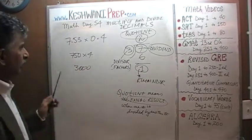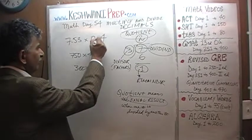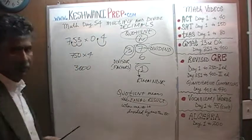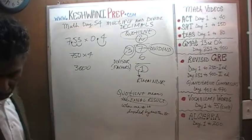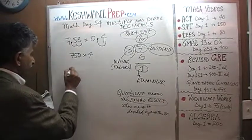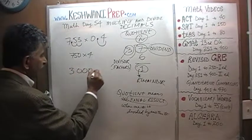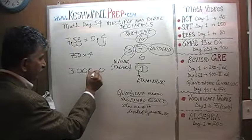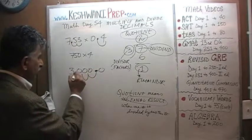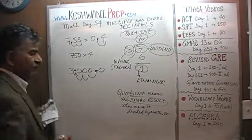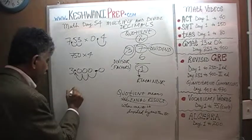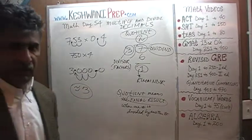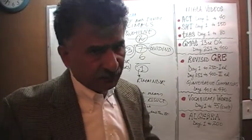Now, this one has one decimal place, this one has one decimal place, and this one has two decimal places. Which means we have to take our final answer — 3000 — and move the decimal place three places: one, two, and three. The correct answer is going to be around three. So if you find one answer that's pretty close to three, that's your answer.